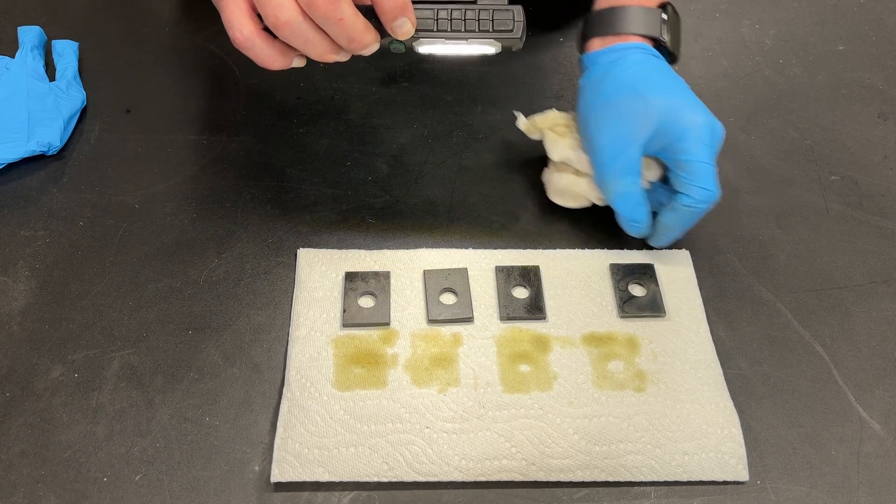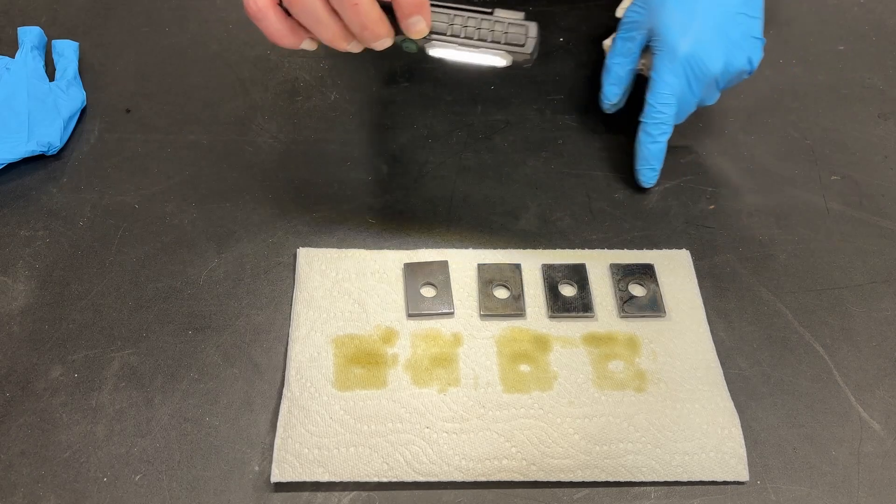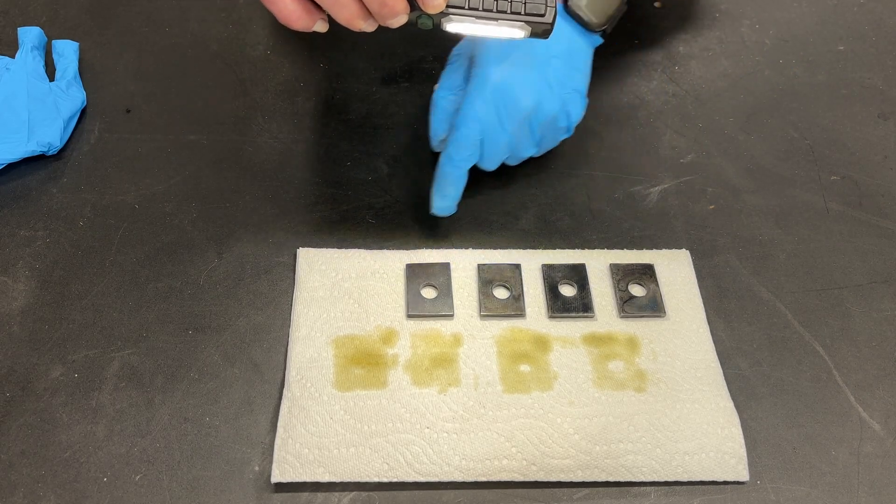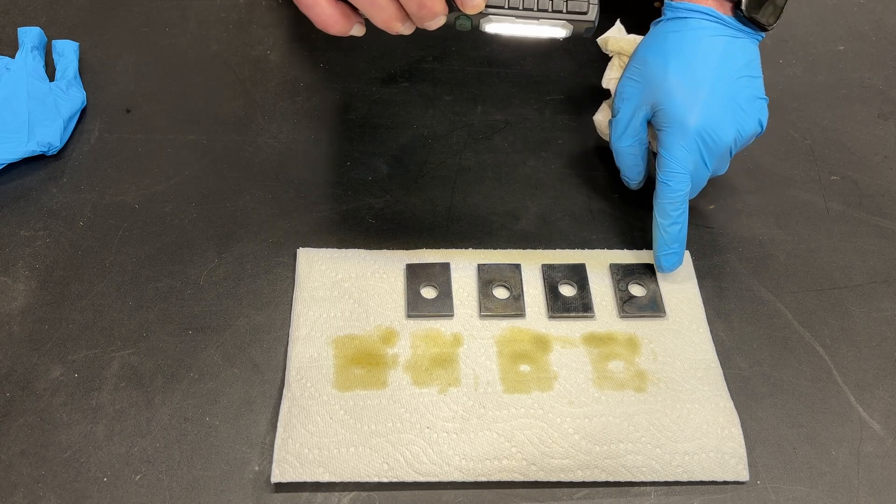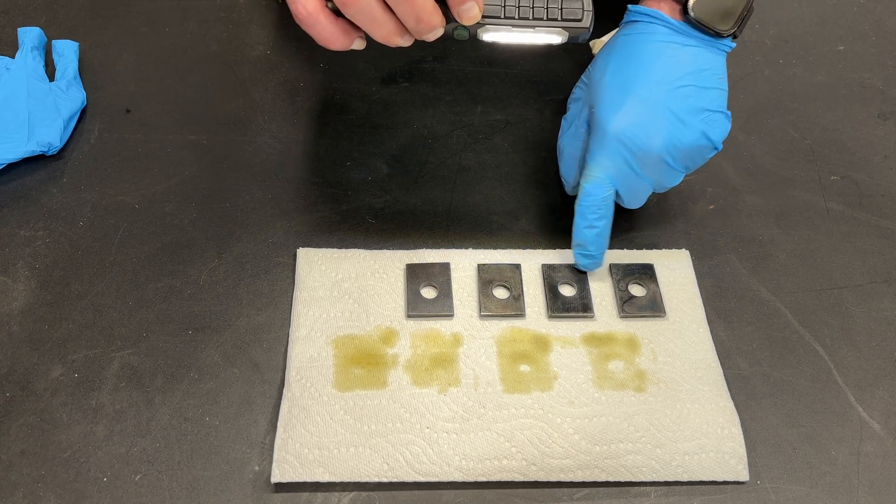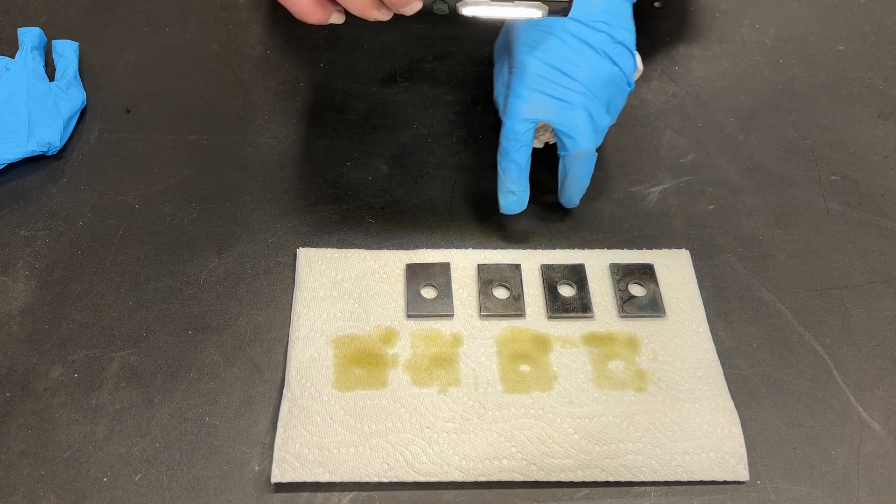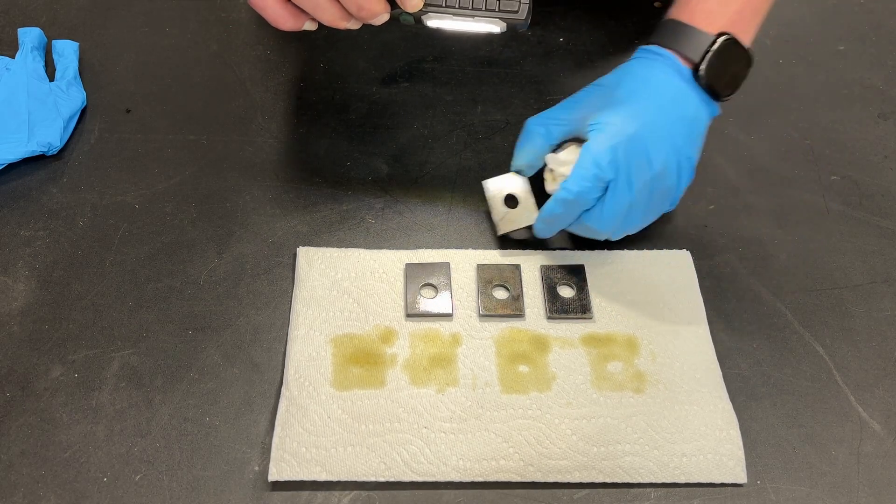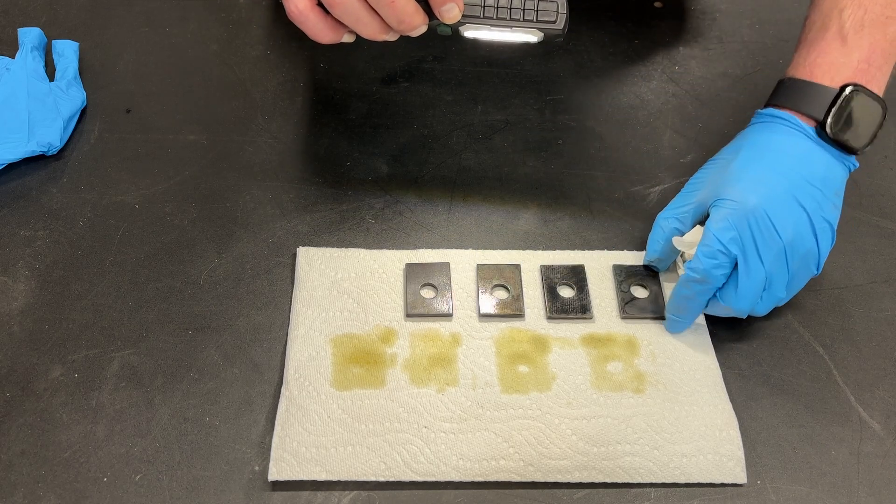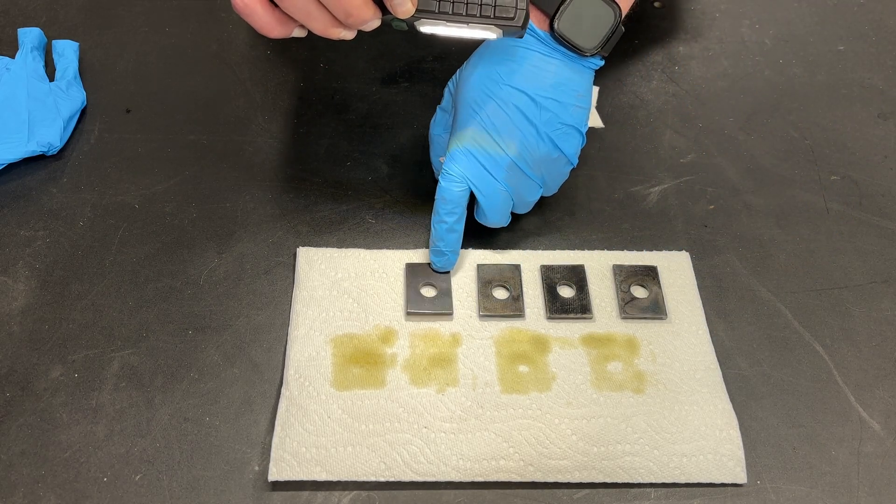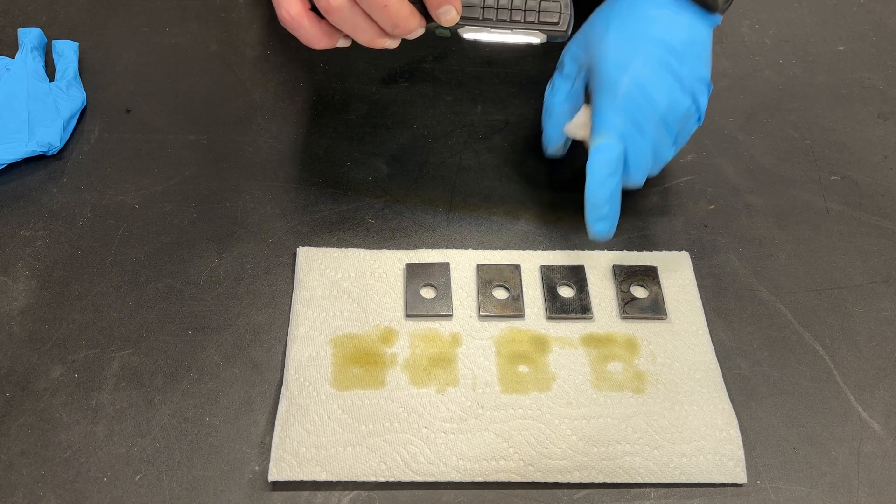All right, now let's flip everything over. On a polished surface, the Caswell is the most uniform, hands down. That is actually the best of the four here. The Perma Blue is the second best. And the JAX and the Super Blue are, again, similar, fairly negligible. So if you're going to go with a polished finish, I would probably either go with the Caswell or the Perma Blue.